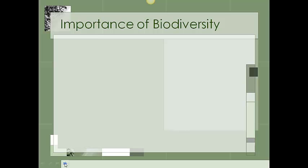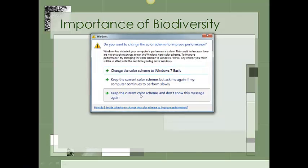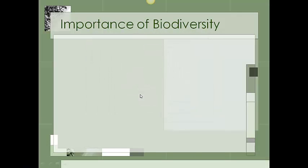The next question we want to address is why is biodiversity important — why is it something that we care about? We're going to go through three different examples of why biodiversity might be important. There are obviously more, but these are the big ones. The first is that if we worry about preserving biodiversity in an area, then we're going to preserve whole ecosystems.